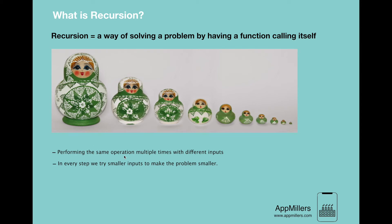Finally, the last property of recursion is that a base condition is needed to stop recursion, otherwise an infinite loop will occur. The base condition is the condition after which we will not do any more recursion — we stop because we have either found the answer or the answer does not exist. In the case of Russian dolls, we open them one by one until we reach the smallest one that cannot be opened, and we need to stop there.